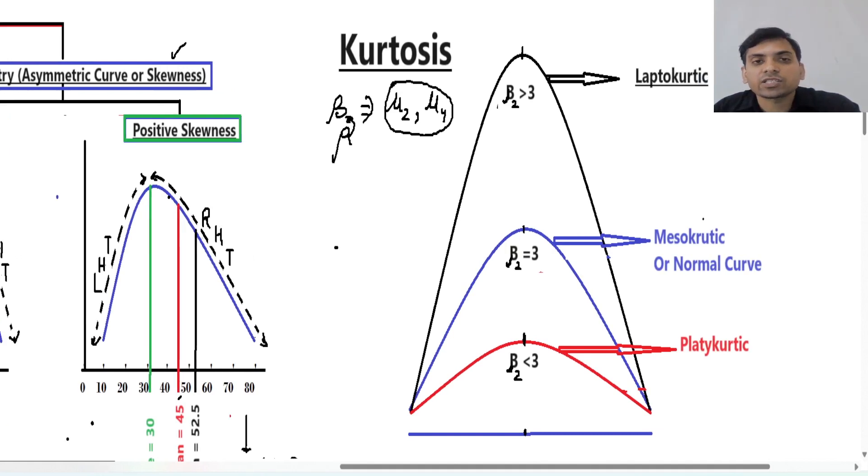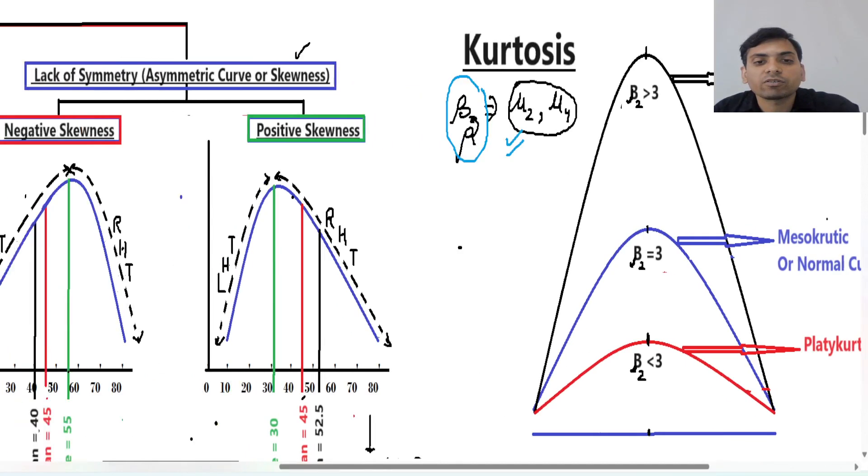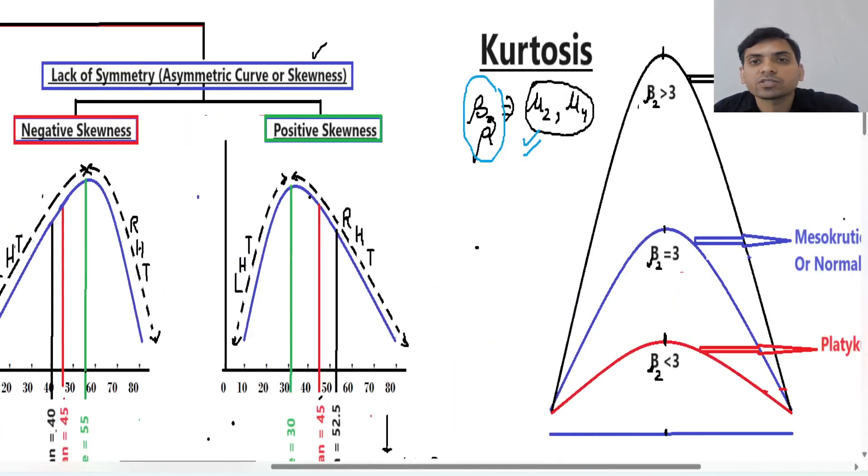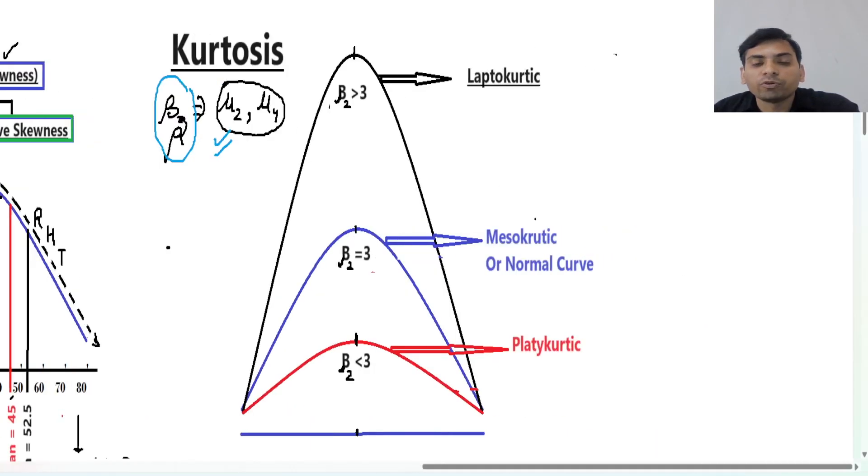And in next lecture, we will study how to find this beta 2 on the basis of moments. And we will also see how to find measure of skewness on the basis of this moments. I hope you understand this concept of kurtosis. Please like this video and subscribe my channel. Have a nice day. Thank you.